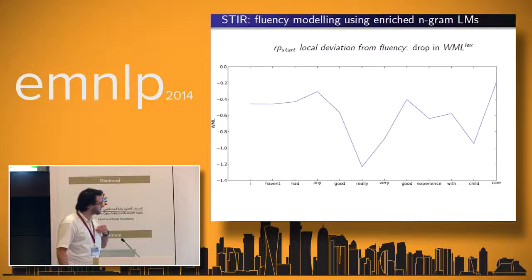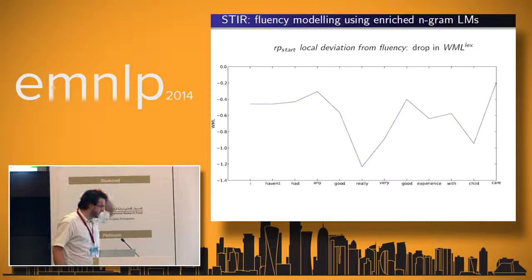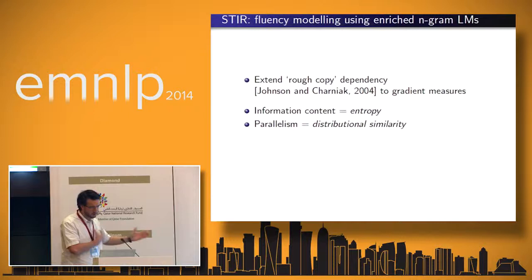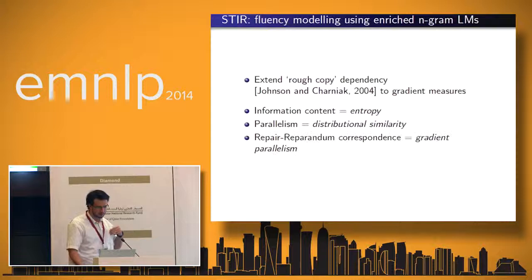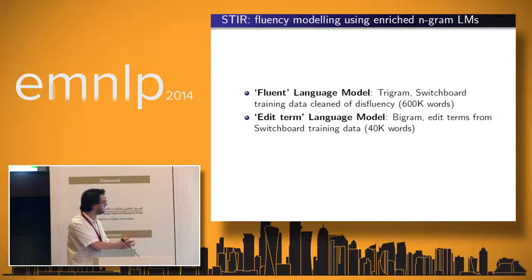We use a lexical model and a POS model, and these do not use word values — we're just looking at measures to see how far we can get. You can see why this is useful when you look at this dip at a repair start: for the sentence 'I haven't had any good really very good experience with child care', at 'really' you see a sharp drop which wouldn't be captured by any string similarity — it's simply a drop in fluency. We can also extend the notion of rough copy dependency to more gradient measures and characterize information content of the onset of repair in terms of entropy, using parallelism judgments in terms of distributional similarity.